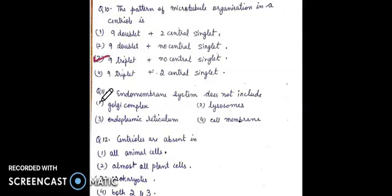Question 11: the endomembrane system does not include — Golgi complex, lysosome, endoplasmic reticulum, or cell membrane. The answer will be cell membrane.